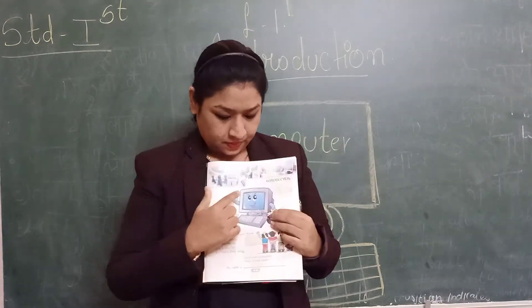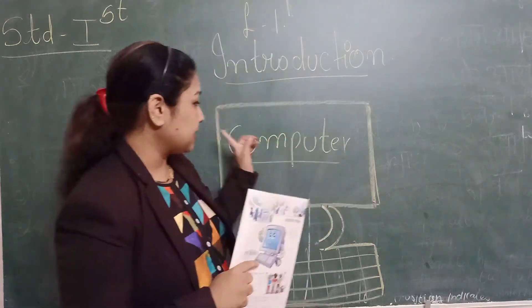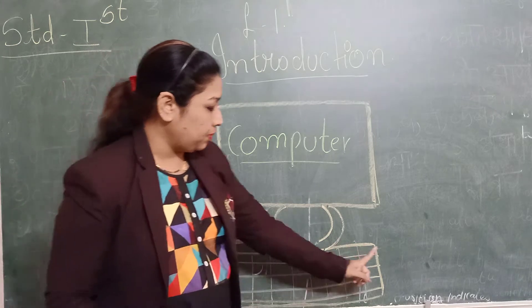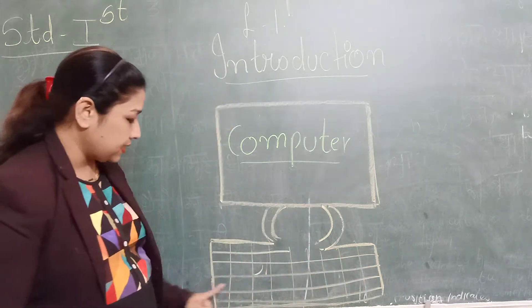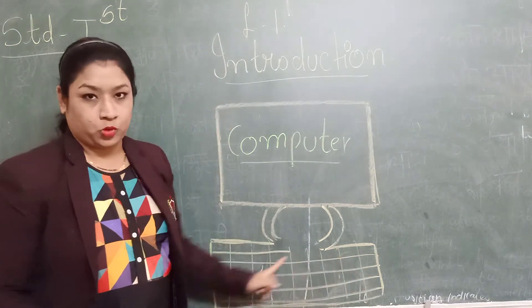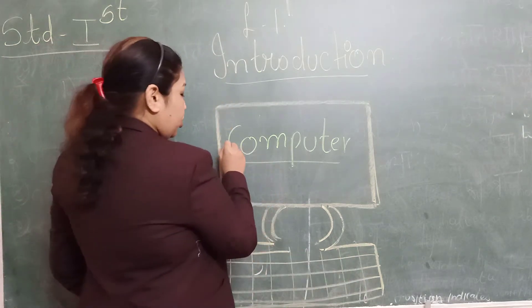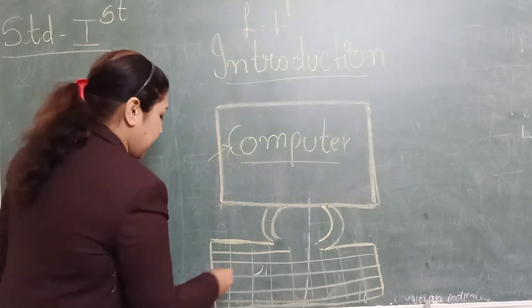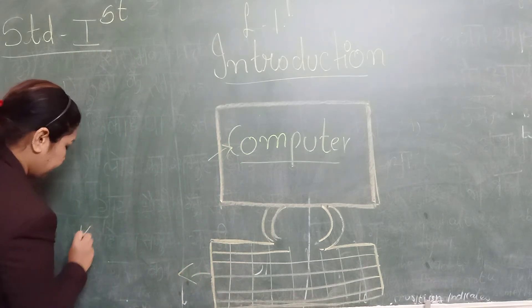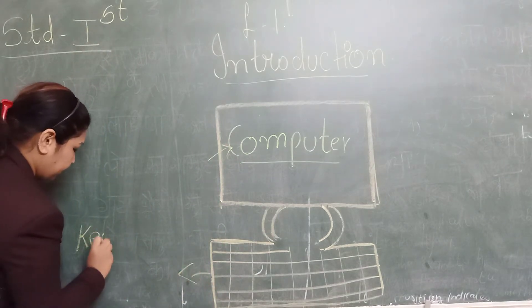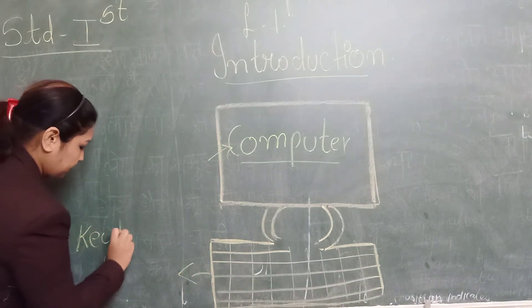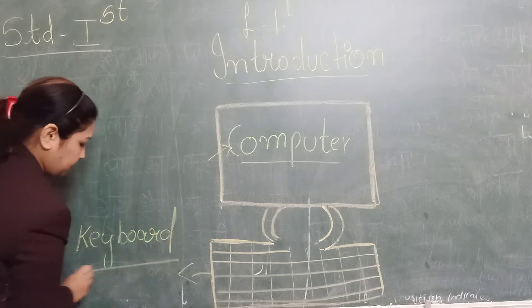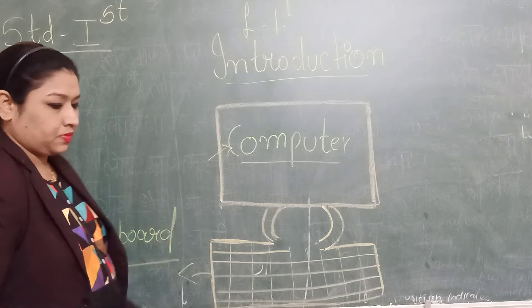See, this is called a computer and this is called a keyboard. Keyboard. This is the computer, right? And this is the keyboard. Okay?